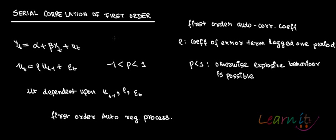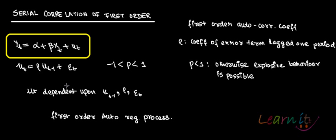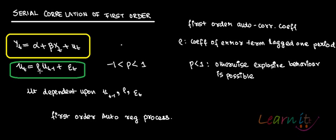Serial correlation of the first order. We have the model: yt equals alpha plus beta xt plus ut. Given that we assume the error term follows the process ut equals rho ut-minus-1 plus epsilon t, ut is dependent upon the one period lagged error term — the error which occurred in period t minus 1. So the error term in period t is dependent upon the error term in period t minus 1.